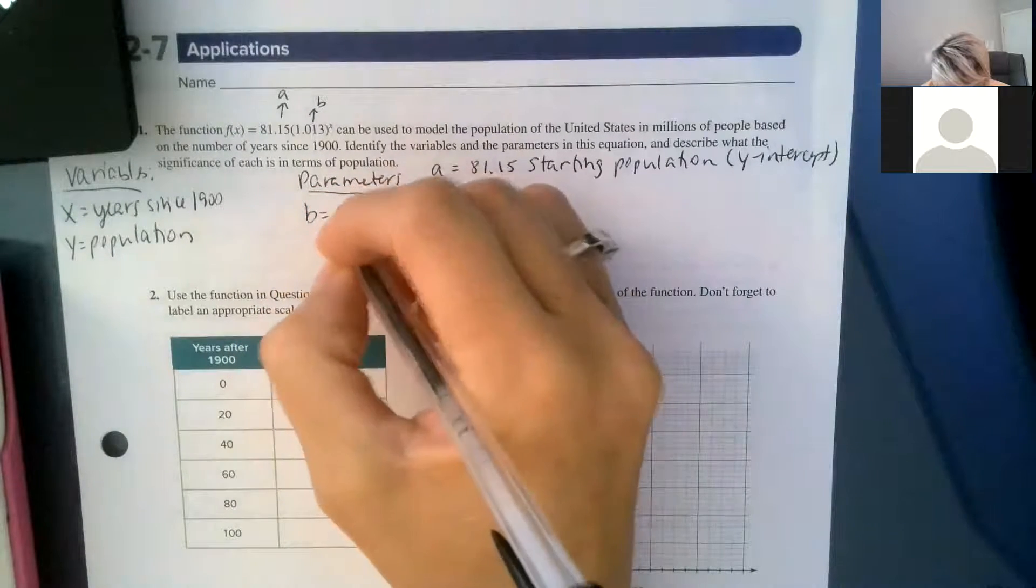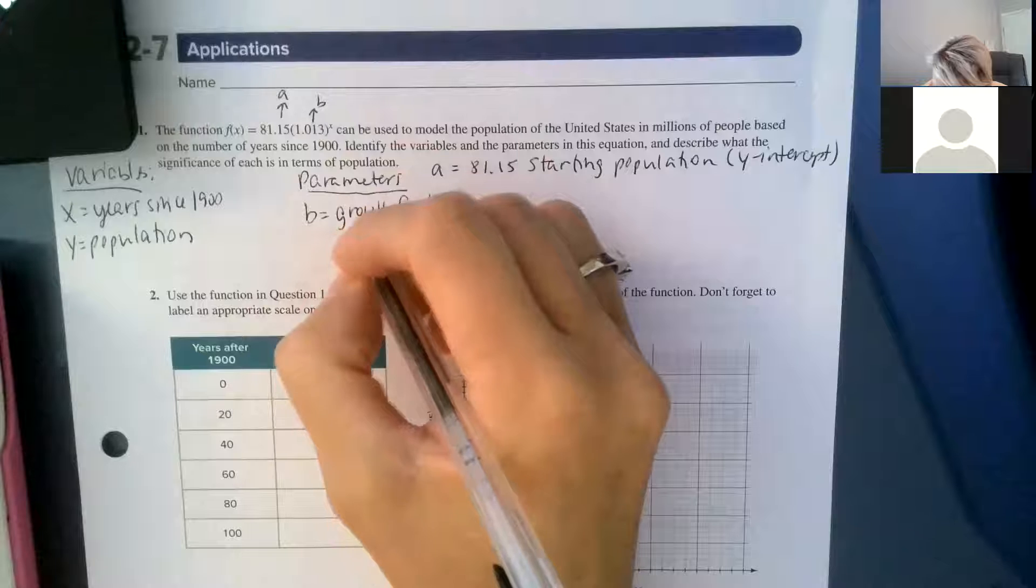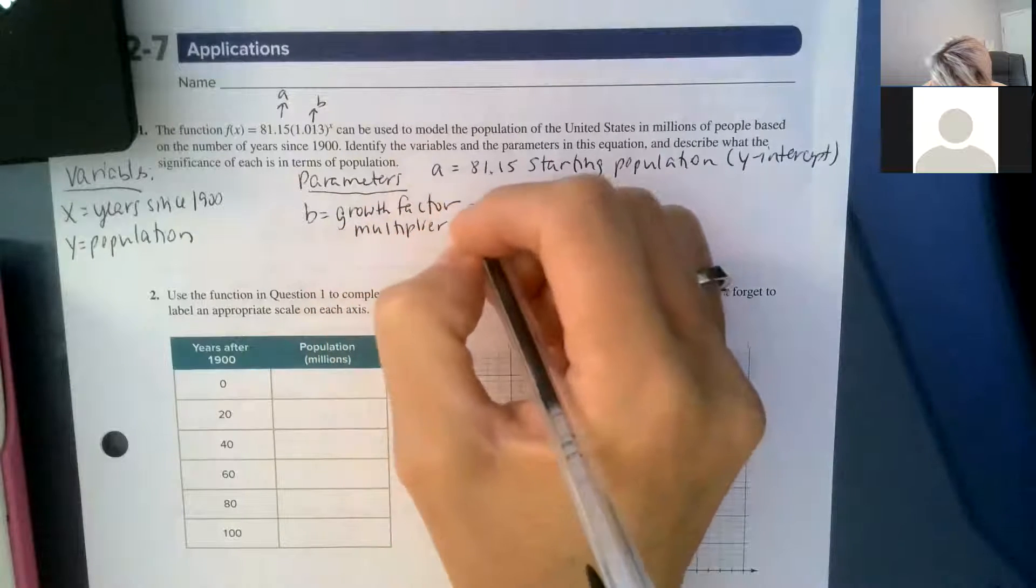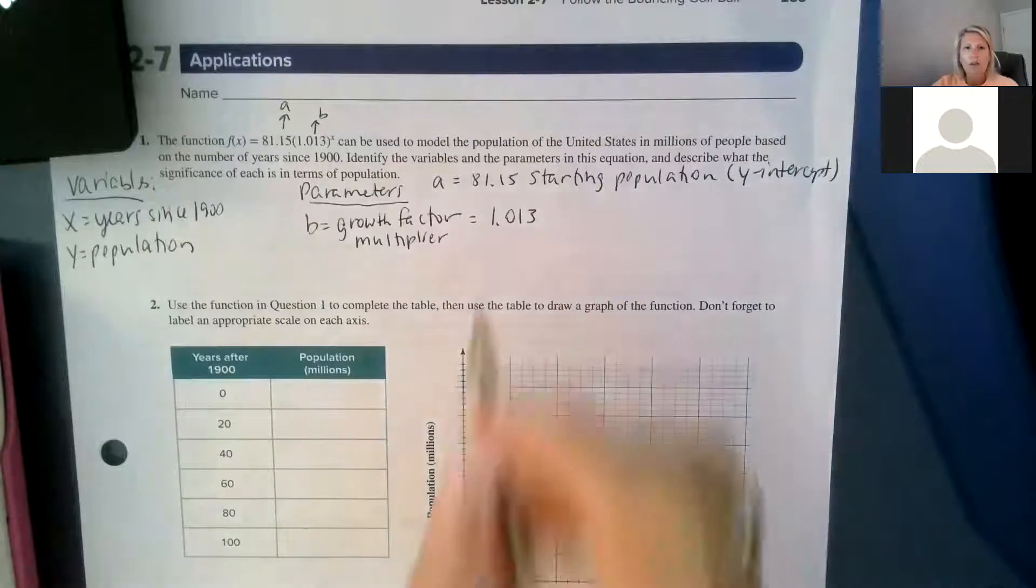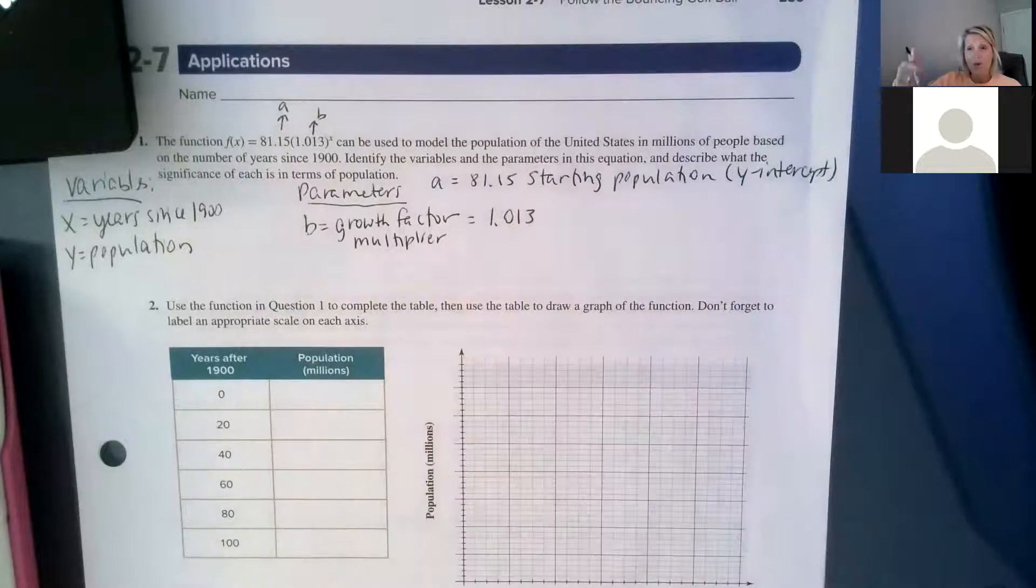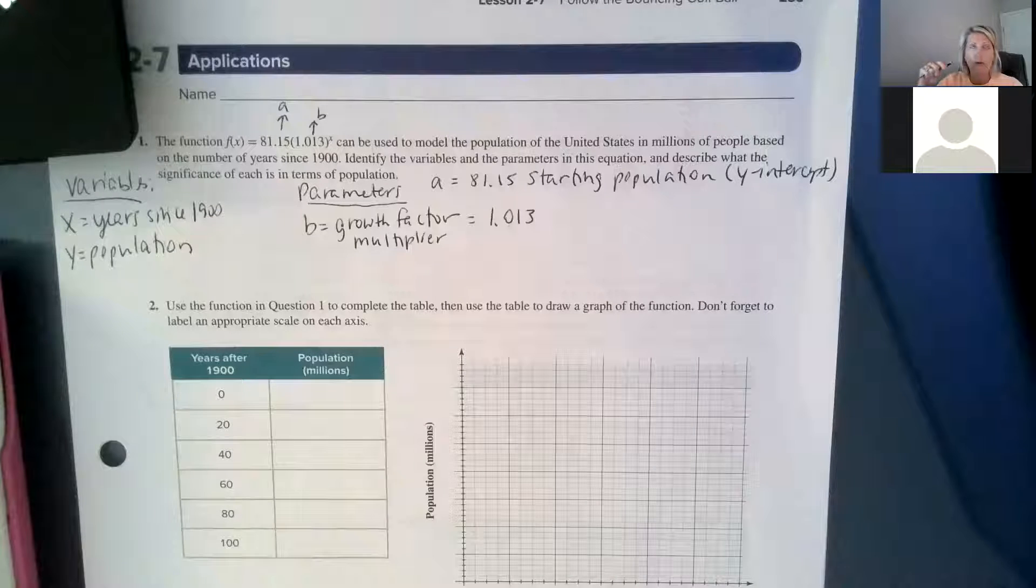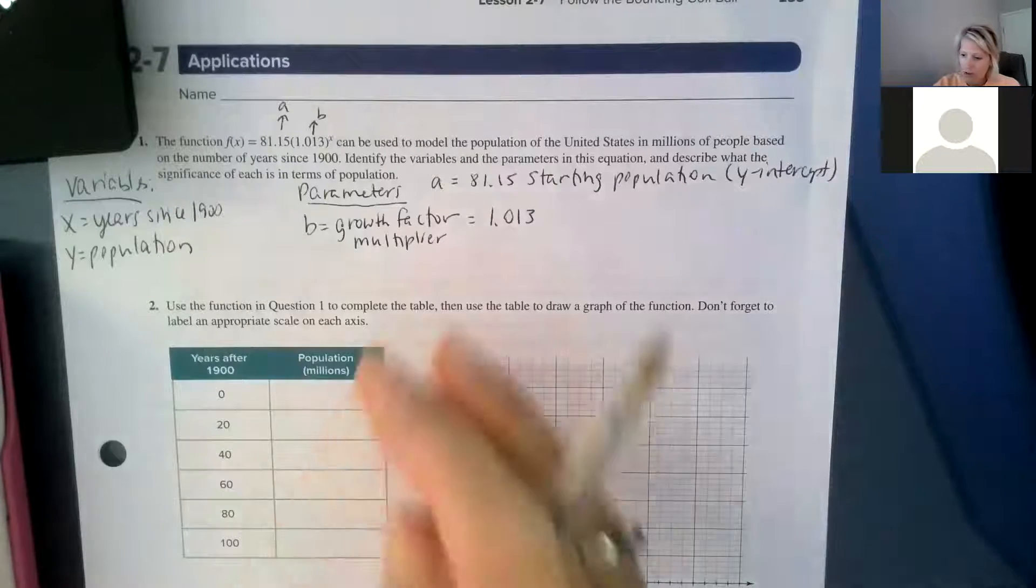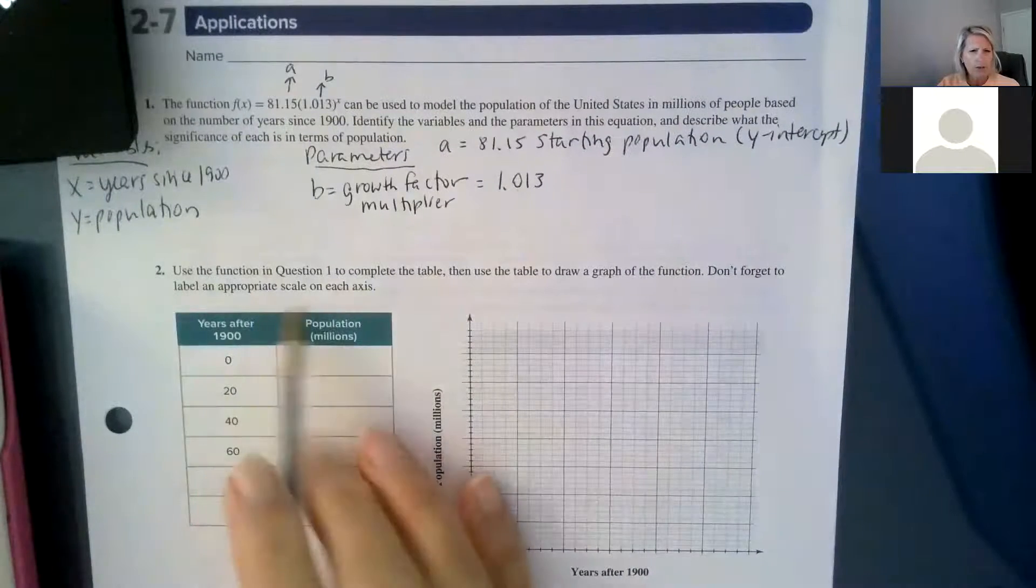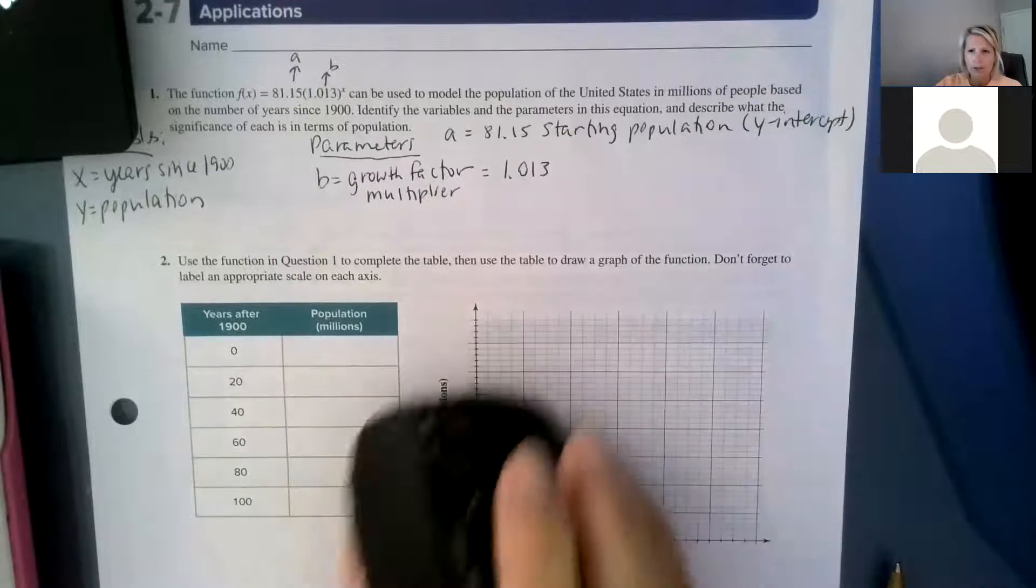And then our other parameter is b, and that's our growth factor, it's our multiplier. So when our growth factor is bigger than one, it tells us that it's growing because it's bigger than one, it's more than 100% multiplying by more than 100% each time. When it's less than one, we found out in the last lesson 2.6 that it's a decay. So those are our parameters. We're going to learn more about this 1.013 thing here in a minute.